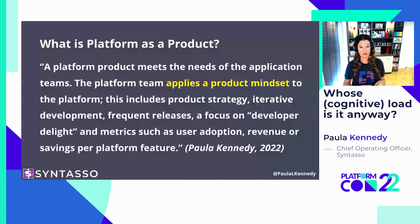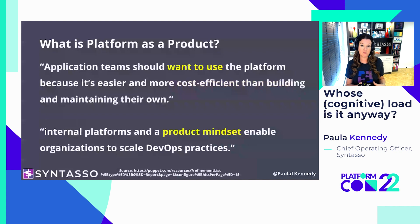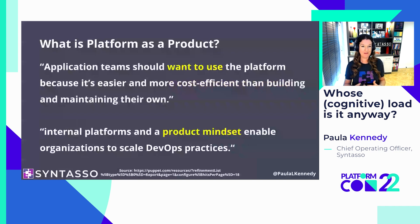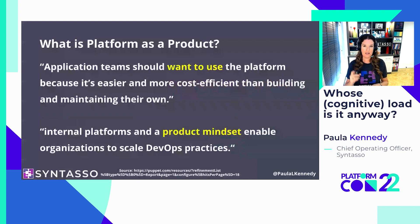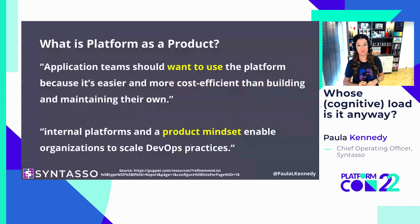If we get this right, then quotes from the Puppet State of DevOps reports from 2020 and 2021 become true: application teams want to use the platform because it's been built to meet their needs and makes it easy for them to get their work done correctly. The internal platform helps organizations scale DevOps. But it's not enough just to meet the needs of app teams — there are also other business concerns to incorporate.